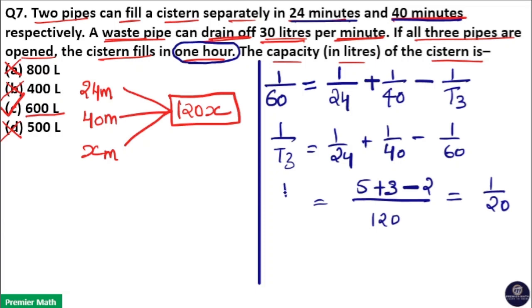Now, 1 by T3 is 1 by 20, means T3 is... time taken for the waste pipe to empty this tank is 20 minutes.